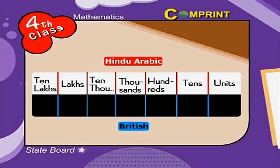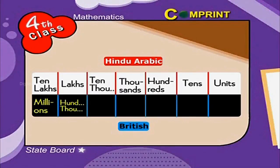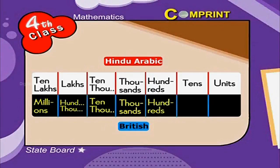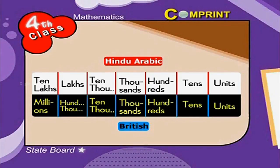In the British system, the place values are: millions, hundred thousands, ten thousands, thousands, hundreds, tens, and units. Now let us observe the commas used in both systems.